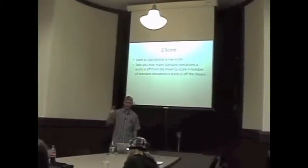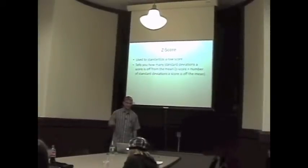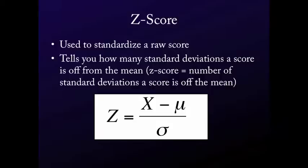A z-score can be directly interpreted as the number of standard deviations a score is off from the mean, and you can see that mathematically. The z-score formula is just your raw score X minus the mean, divided by the standard deviation. So if the mean is 100 and you get a 120 on your IQ test, and the standard deviation is 10, you're two standard deviations off the mean — your z-score would be positive two. If you got an 80, it would be minus two.